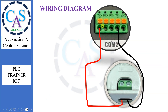Wiring Diagram: In Modbus, HMI and PLC communication wiring is very easy. As you can see, the positive wire of HMI is connected to the positive wire of PLC, and the negative wire of HMI is connected to the negative wire of PLC. Connect the positive wire of HMI to the positive wire of PLC, and the negative wire of HMI to the negative wire of PLC.